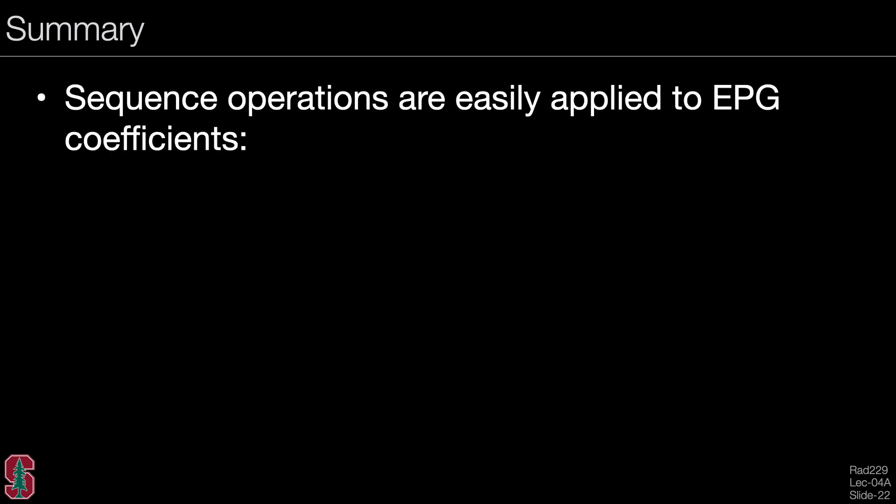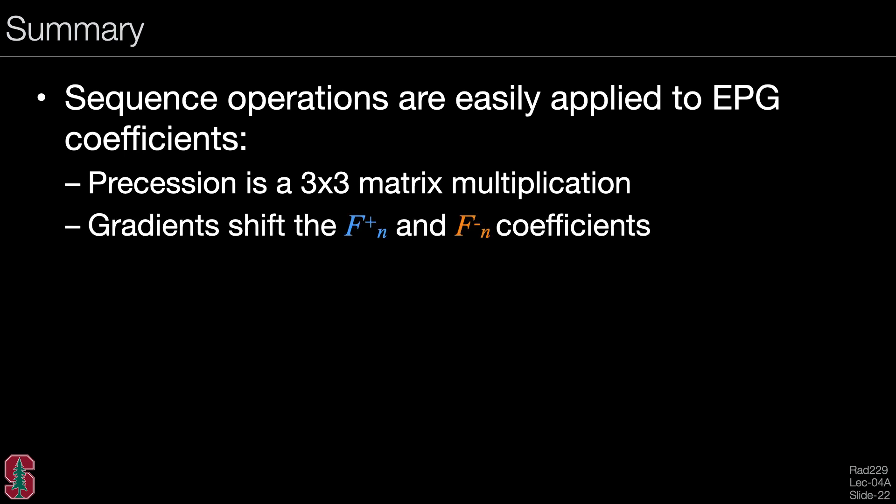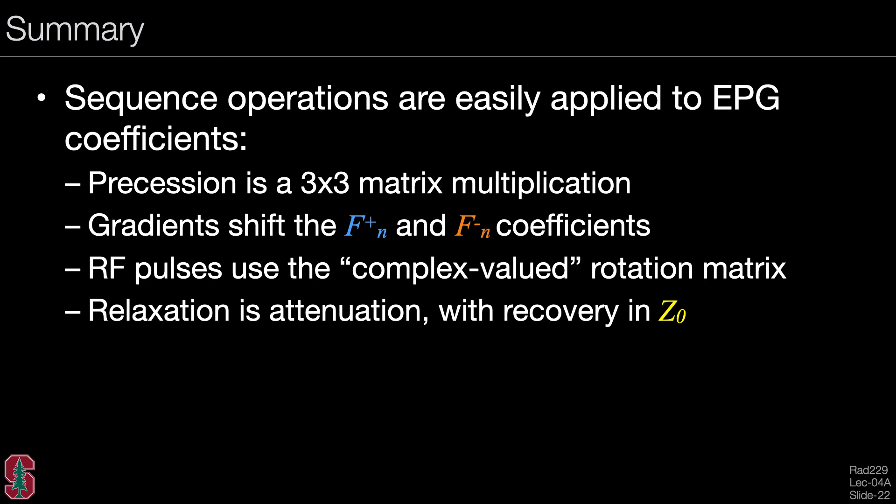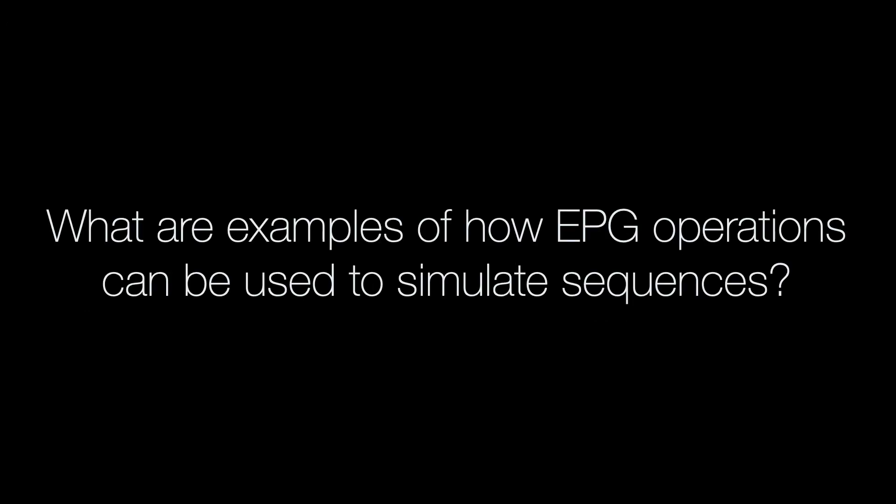So to summarize this lecture, sequence operations are easily applied to EPG coefficients. Precession is a 3 by 3 matrix multiplication. Gradients shift the transverse F plus and F minus coefficients. RF pulses use a complex valued rotation matrix, just as we've seen before. And relaxation is a combination of attenuation with all states with recovery applied only to the Z0 state. So next we will see what are some examples of how EPG operations can be used to simulate sequences.